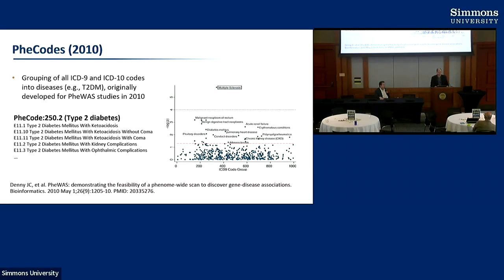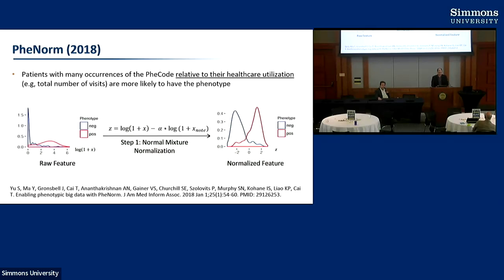One prior algorithm is called FeeCodes — a mapping developed to roll up raw ICD-9 and ICD-10 codes used for billing into disease categories, simplifying the data but not doing the cleanup. The insider collaborator Tengshi Kai, a biostatistician at Harvard, discovered that you get much better accuracy by looking not only at the number of times a patient has a condition listed, but normalizing this based on healthcare utilization.